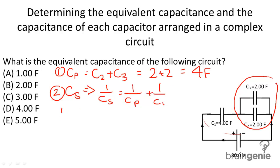And then we're going to solve for Cs now, so 1 over Cs equals 1 over 4 plus 1 over 4. That's going to equal 1 half. Therefore, Cs is going to be equal to 2 farads, and that's going to be the total capacitance. And that's answer choice B.